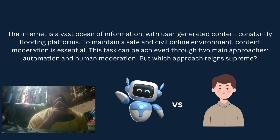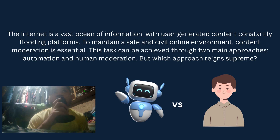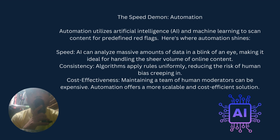Content moderation is basically the process of filtering and curating content that users post to see if it is friendly or not harmful to advertisers and users of the platform, and that it doesn't spread ill-intentioned or maligned ideas. This task can be achieved through two main approaches: automation using AI, and human content moderation. First, I'll be talking about the speed demon, which is AI automation in content moderation.